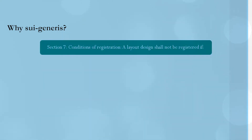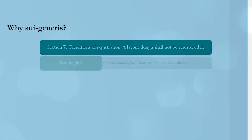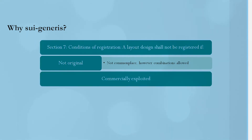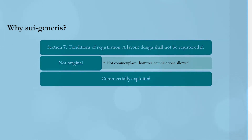Section 7 of the Semiconductor Chip Act in India sets out the conditions for registration. It mentions that a layout design shall not be registered if it is not original, meaning it should not be a commonplace design; however, a combination of designs is allowed. Designs that have not been commercially exploited and are not inherently distinctive may also not be registered. However, in cases of commercial exploitation, one can commercially exploit for a few years and then subsequently register under the act — a flexibility not available in other regimes such as patent law, where you must file first.